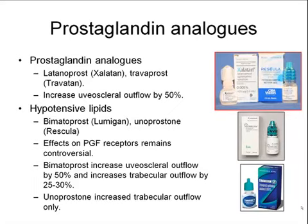There are also similar medications called the hypotensive lipids. These include Lumigan and Rescula, or bimatoprost and unoprostone. The effect of these medications on the prostaglandin F-receptor remains somewhat controversial. Lumigan can increase uveal scleral outflow by up to 50%, and it also increases trabecular outflow by 25% to 30%. Unoprostone, or Rescula, which is no longer available, just increases trabecular outflow only.